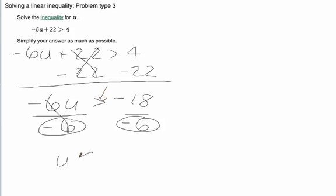So it becomes less than the answer here. Negative 18 divided by negative 6 is a positive 3. So our final answer is u less than 3. The trick here is to remember that this sign switches any time we multiply or divide by a negative.